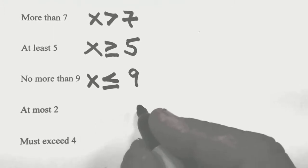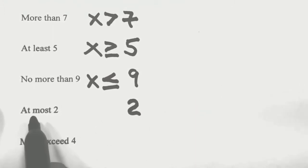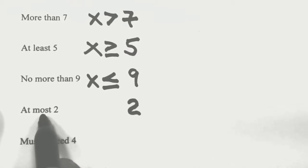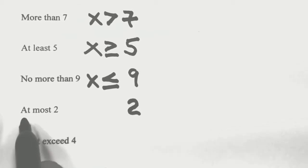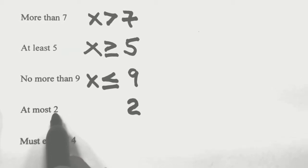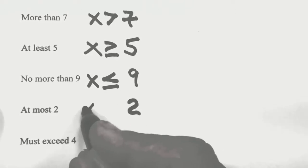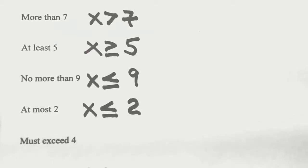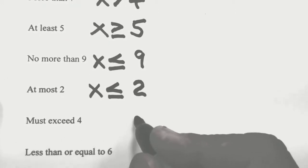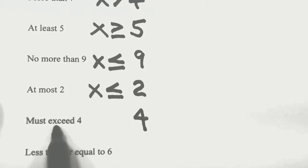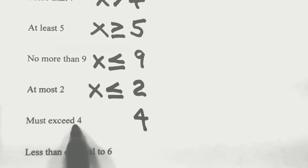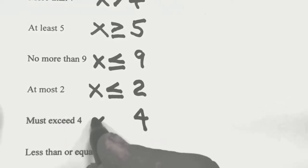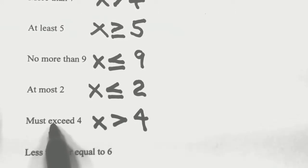At most 2: 2 is the most we can be, meaning we can't be larger than that. Can we be more than 2? No. Can we equal 2? At most we are 2, so we could equal 2. Can we be less than 2? Yes. So x can be less than or equal to 2. At most 2 means we have to be 2 or smaller. Must exceed 4: we must be larger than 4. Can we be more? Yes. Can we be equal? No, we must exceed 4, so we can't be 4. Can it be less? No. So x has to be greater than 4.